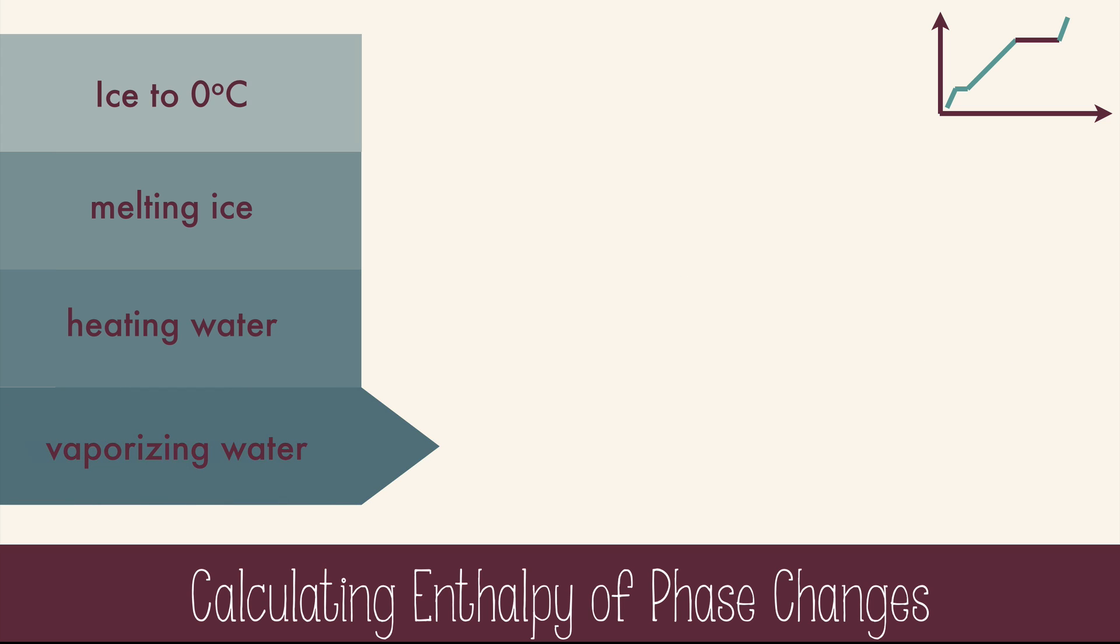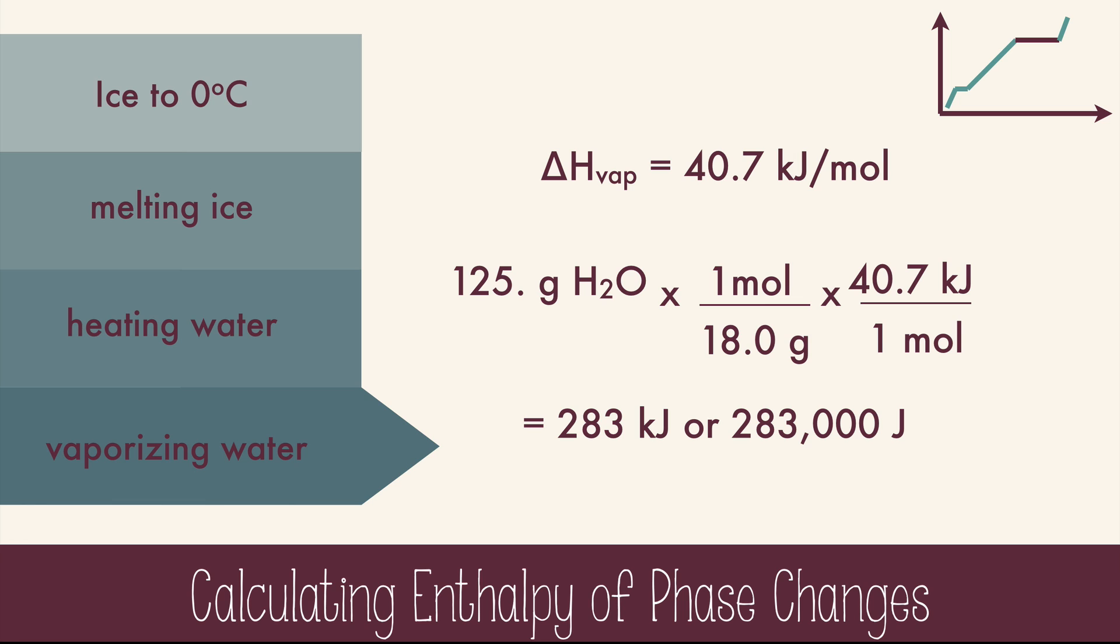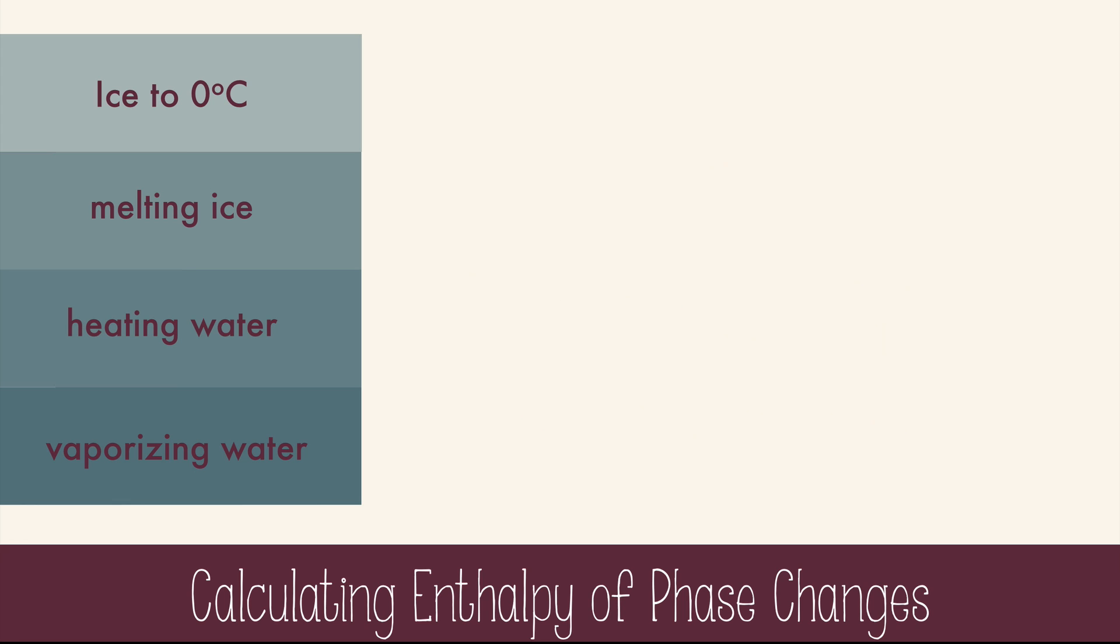Now finally, we'll calculate the heat of vaporization of the water with the enthalpy of vaporization and dimensional analysis. 125 grams times the molar mass of water times the molar heat of vaporization, and we get 283 kilojoules or 283,000 joules. Finally, you're going to add the values from every single step in the process, and our grand total is 380,000 joules or 380 kilojoules.